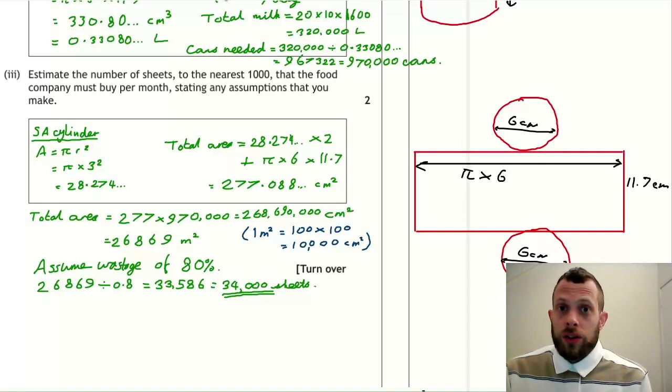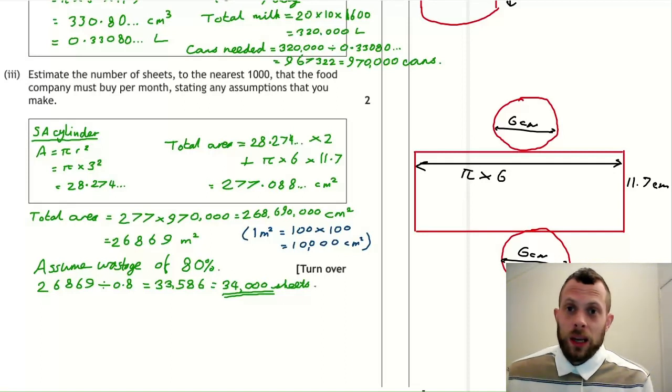So you get 33,586 and we will round that 34,000 sheets. And this is another thing that I think is difficult in this question, is how anyone would know you were supposed to account for wastage and also the working backwards. Just remember if you have a similar question, then you might need to account for wastage and you would do this by doing a reverse percentage calculation like we did here.